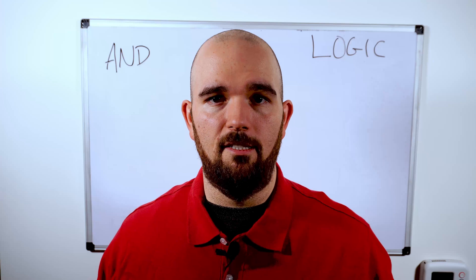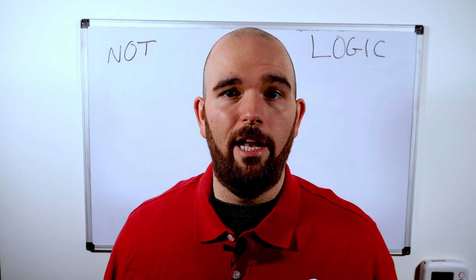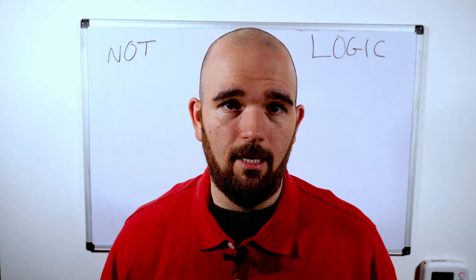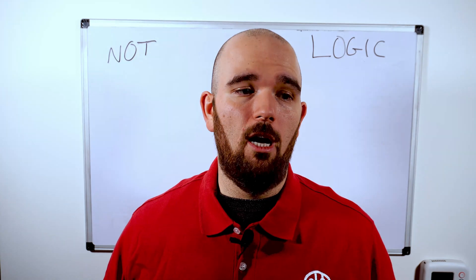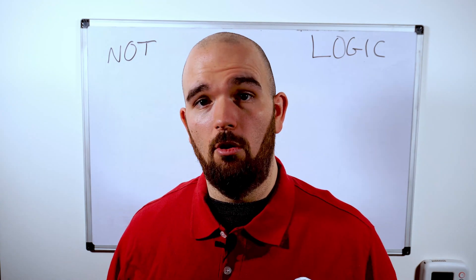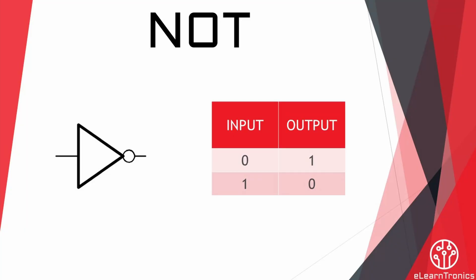So with AND and OR out of the way, those are our two basic gates. So let's get into some more complexity. Now let's talk about a NOT. What is a NOT gate? Well, the NOT gate is very simple. It's also called an inverter. It just says, are you putting in a one? Then I'll return a zero. Are you putting in a zero? Then I'll return a one. It just inverts the value of whatever is going into it.